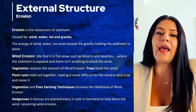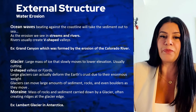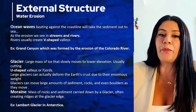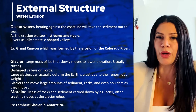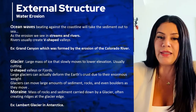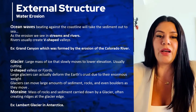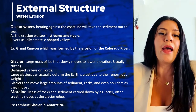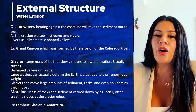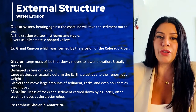Areas with vegetation tend to have less wind erosion because trees block the wind and plants hold the sediment. Water erosion — ocean waves beating against the coastline will take sediment out to sea. Erosion also happens in streams and rivers; the Grand Canyon was formed by the erosion of the Colorado River.